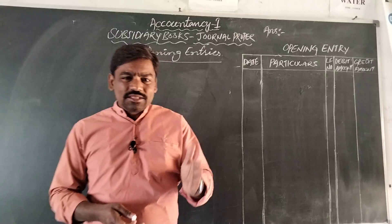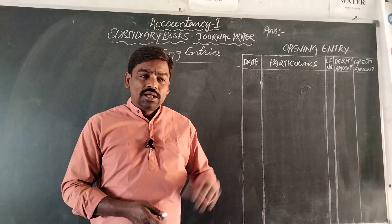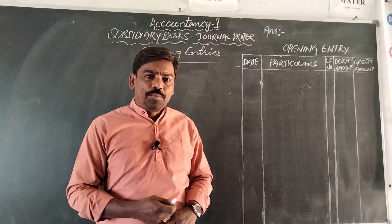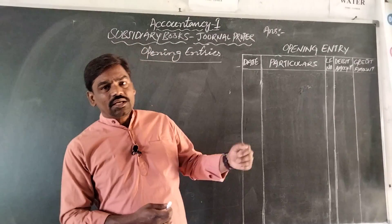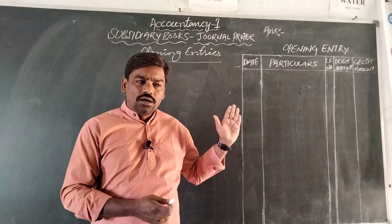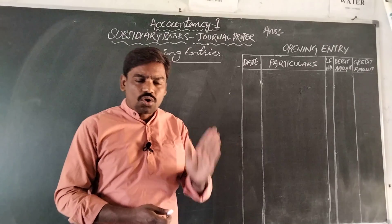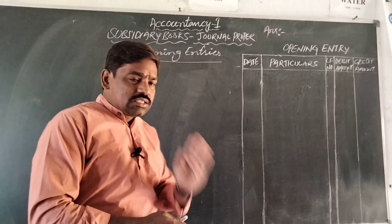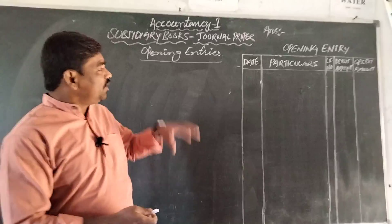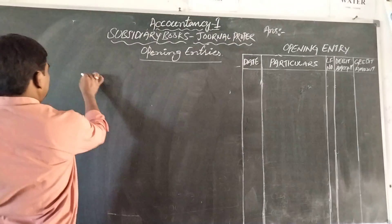The third situation is: the assets and liabilities balances in the previous year's balance sheet are transferred to the next year as opening balances. The entries made in the journal proper for such transfers are called opening entries. All assets are taken on the debit side and all liabilities are shown as credit balances. The difference between total assets and total liabilities is the net worth of the business, transferred to the capital account. The accounting equation is: Capital = Total Assets − Total Liabilities.